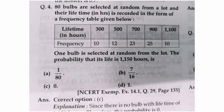Moving to question number 4. 80 bulbs are selected at random from a lot and their lifetime in hours is recorded in a frequency table. 300 hours: 10 bulbs, 500 hours: 12 bulbs, 700 hours: 23 bulbs, 900 hours: 25 bulbs, and 1100 hours: 10 bulbs. One bulb is selected at random. The probability of its life being 1150 hours — from this data you can see that no bulb lasted 1150 hours, so the probability of this event will be zero because this is an impossible event.